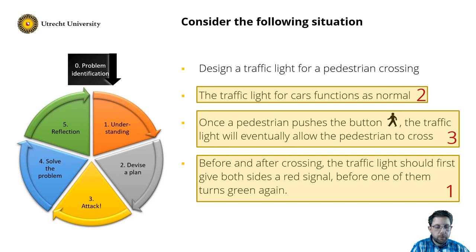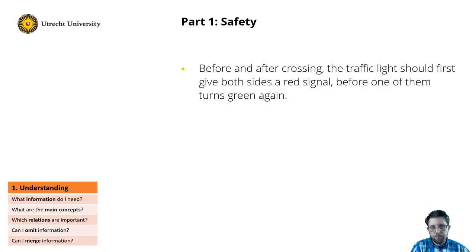So let's move to part 1. Before and after crossing, the traffic light should first give both sides a red signal before one of them turns green again. I think we understand the problem well enough, so let's move to devise a plan.